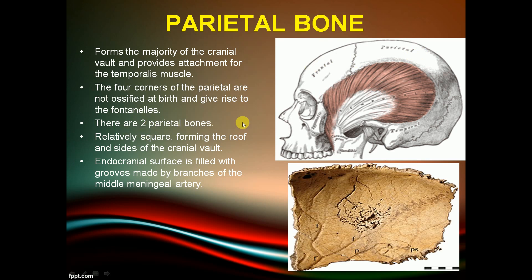There are two parietal bones, forming the roof and side of the cranial vault. The endocranial surface is filled with grooves made by the branches of the middle meningeal artery.